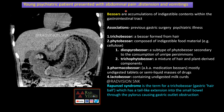Bezoars are commonly seen in previous gastric surgery patients and those with psychiatric illness. The different types are trichobezoar, phytobezoar, pharmacobezoar, and lactobezoar. Rapunzel syndrome is a condition where a gastric hair ball has a tail-like extension extending into the small bowel through the pylorus, causing gastric outlet obstruction. Remember bezoar and Rapunzel syndrome.